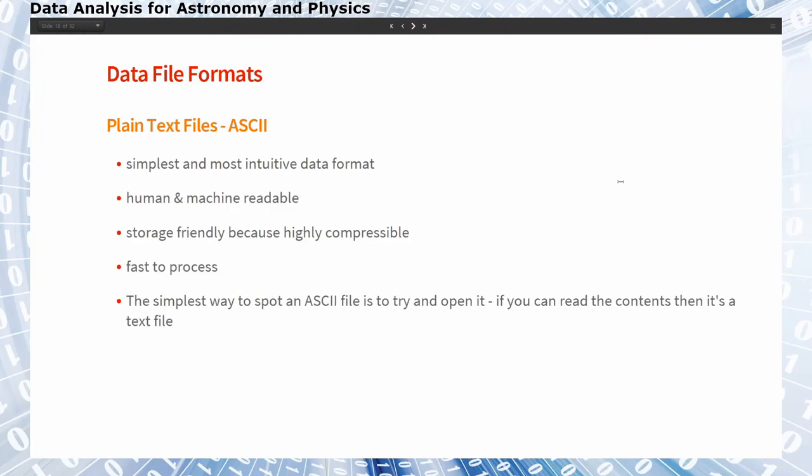We start with the most simple example: an ASCII file, a plain text file. This is the most intuitive data format and it has the big advantage that it is human readable. It's storage-friendly because highly compressible using algorithms like zip or gzip. These plain text files are usually pretty fast to process, and it's very simple to access them and get an idea about the contents.